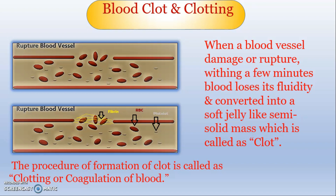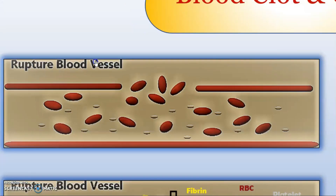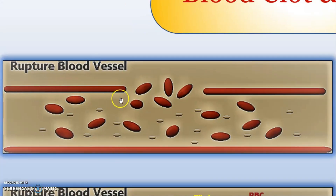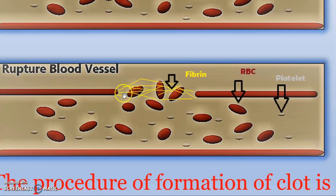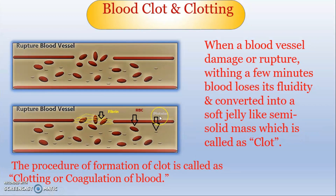I will show it with the help of a diagram. From the diagram you can see there is a ruptured blood vessel and from this damaged part there is a loss of blood with its blood components. But after a few minutes a soft jelly-like semi-solid mass forms — a thread-like structure called a clot — and this will stop further blood loss. The whole procedure of formation of this clot is called clotting of blood or coagulation of blood. Coagulation is a similar term for clotting.